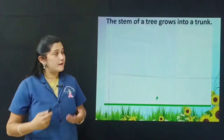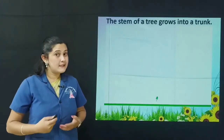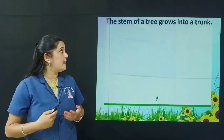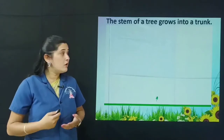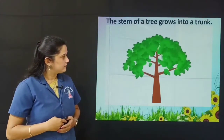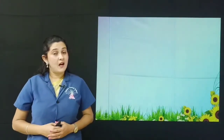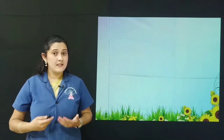The stem of a tree grows into a trunk. You can see in this short video how the stem of a tree grows into a trunk. There are different types of stems: herbaceous stems, woody stems, and modified stems.